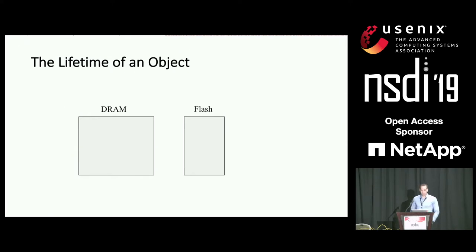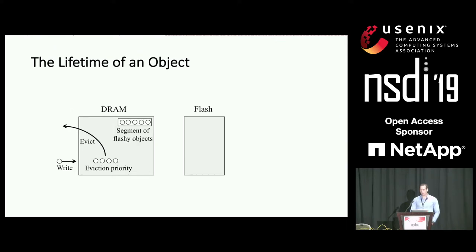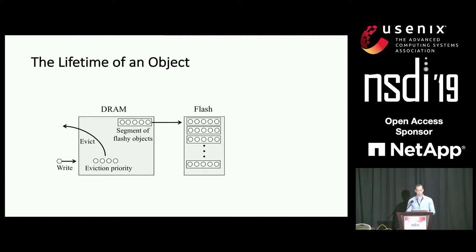Let's see how it all works together. When we allocate an item, we first go to DRAM and the eviction queue may trigger evictions of other items. The cleaner runs in the background and, once enough flashy items are in DRAM, creates a segment and allocates it to Flash. Eventually Flash fills up with segments, and we evict a segment in FIFO order — ghost items are deleted and non-ghost items are rewritten back to DRAM to prove their flashiness again.